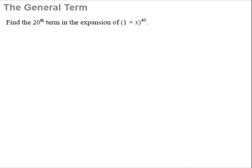Let us spend a little bit of time to talk about the general term. Now that you have learned your binomial theorem, you may think that given any binomial expansion, you can expand it no problem. So what if a question like this pops up? Find the 20th term in the expansion of 1 plus x to the power 40. The question did not ask you to expand the entire binomial expansion — it specifically asks you to find the 20th term.